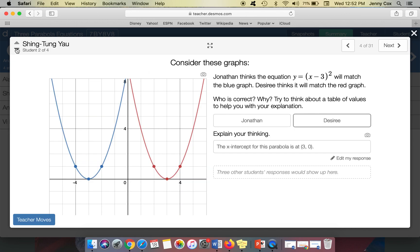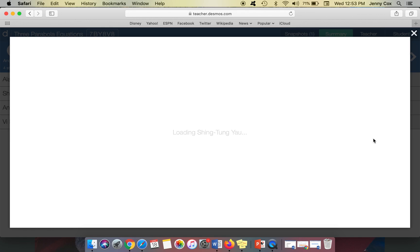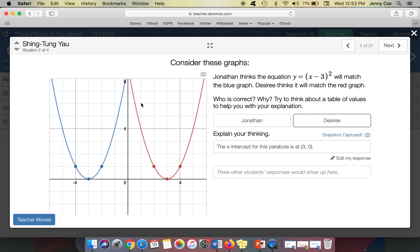And maybe I check the other students. I can click down and check other students. The x intercept is at (3,0). It shifted three spaces to the right. And so there's lots of different answers that they have.